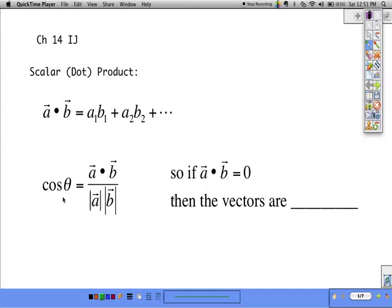And this formula for cosine theta can be derived from the law of cosines, but what it says is we can take the dot product of A and B, and divide that by the magnitude of A and the magnitude of B, and that will tell us what the cosine of the angle between the two vectors is.